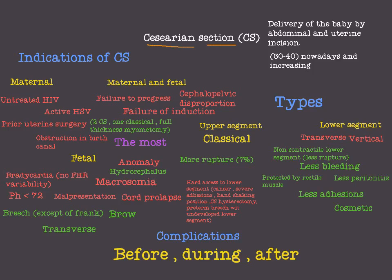Caesarean section, or CS, is the delivery of a baby by abdominal and uterine incision. It is the operative delivery of the baby rather than normal vaginal delivery. Nowadays we have increasing rates of caesarean section due to advancing anaesthesia, and the mortality and morbidity of caesarean section have decreased, which is why we have a lot of CS, along with other causes.